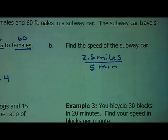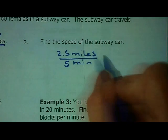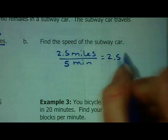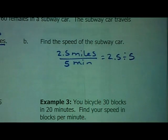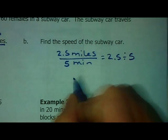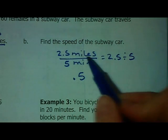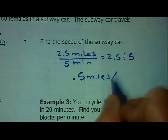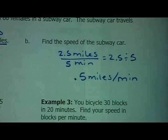So, easy shortcut. Just take 2.5 divided by 5. When you do that, you get a result of 0.5. That's 0.5 miles per minute. Which is how you would say your speed.